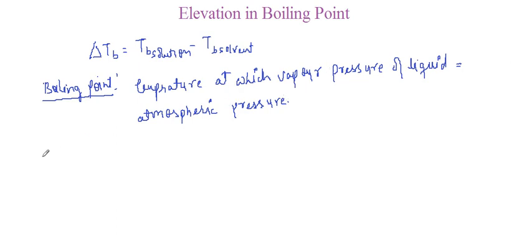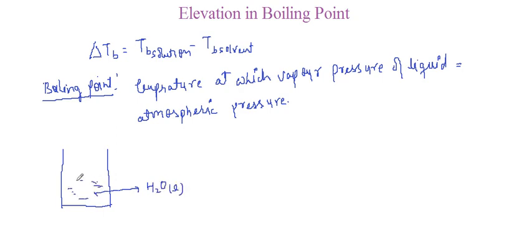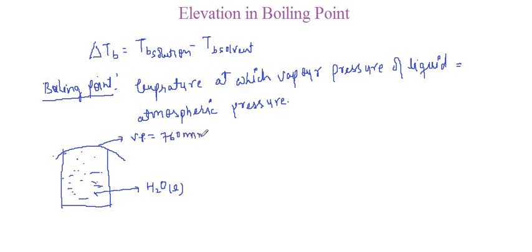Now we have a container with H2O water in the liquid state. Suppose it is at the boiling point — it is boiling. When it is boiling, the vapor pressure generated is equal to atmospheric pressure, because it is boiling. That means 760 mm of Hg. This is also known as barometric pressure.